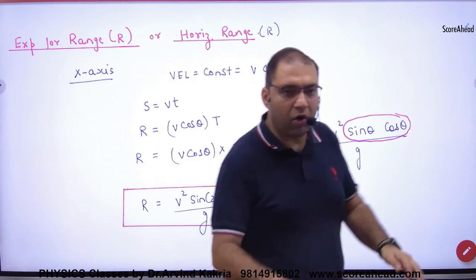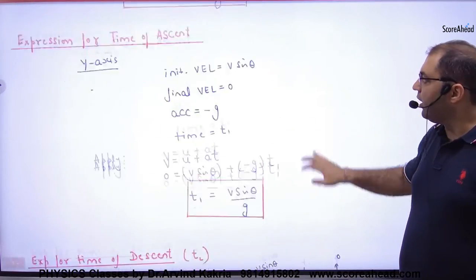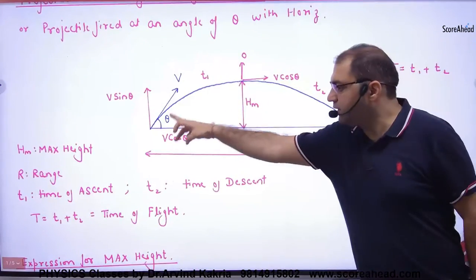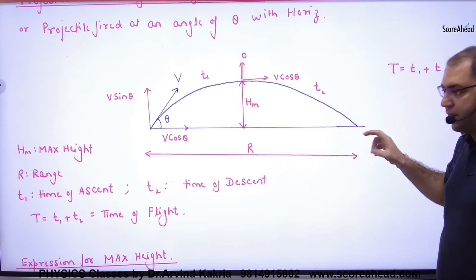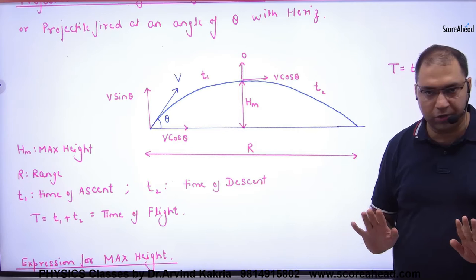Expression for range or horizontal range covered by the projectile. For example, if your body goes here from here, then in this case, the ground distance, what do you call it? Horizontal range or range, clear?